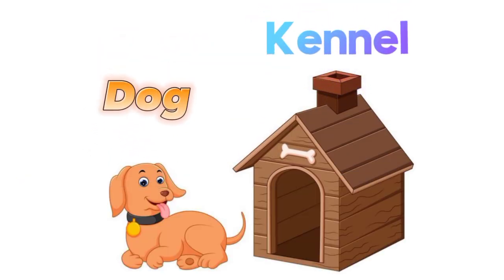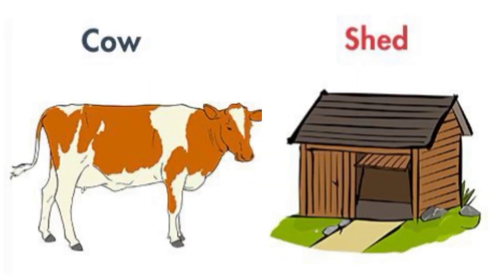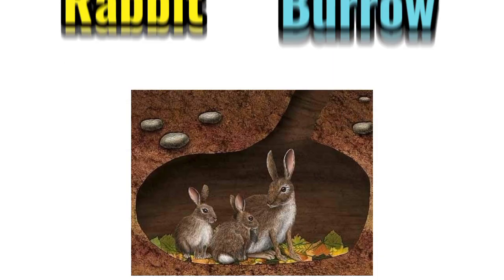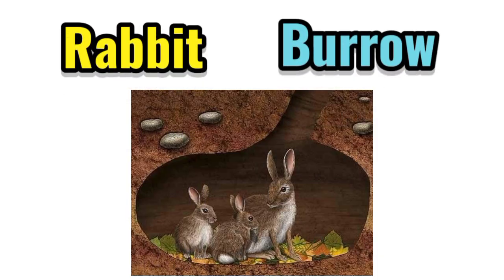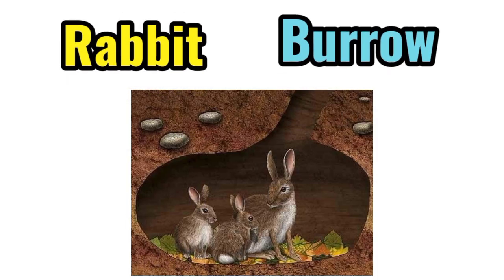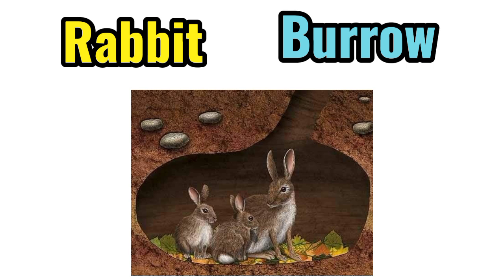Dog. Dog lives in a kennel. Cow. Home of a cow is called a shed. Rabbit. Rabbit lives in a burrow.